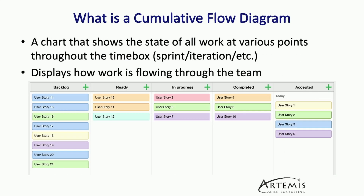A cumulative flow diagram is simply a visualization of the work as it flows through the different work steps of your flow. In this particular example, you can see we have five steps based off of Rally software's implementation: backlog, ready, in progress, completed, and accepted. You'll see that there's not a design, build, test kind of structure here — in progress includes all of those things. We are trying to avoid creating silos between development and test on our teams, as breaking them out on our workflows tends to reinforce that mindset.